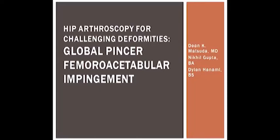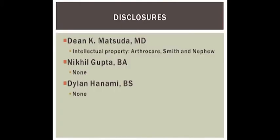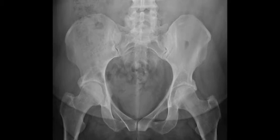This is a supplemental video to hip arthroscopy for challenging deformities: global pincer femoroacetabular impingement. This young woman has severe global pincer impingement of both hips, more symptomatic on the right, which will be the focus of this demonstration. She has a center edge angle of 62 degrees and a downsloping sore seal.